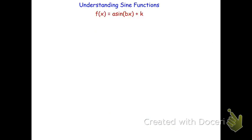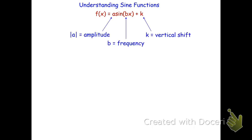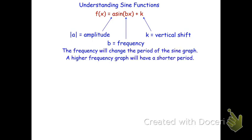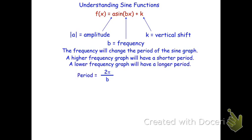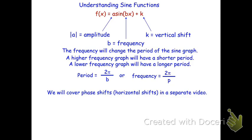The function form of a sine graph — this is the general form — f of x equals a sine of quantity bx plus k, where a is the amplitude, b is the frequency, and k is the vertical shift. Keeping in mind frequency is what changes the period of the sine graph, where a high frequency graph will have a short period, and a low frequency graph will have a longer period. The period can be found by taking 2π and dividing by the frequency b, or the frequency b can be found by taking 2π and dividing by the period. Keeping in mind that the period times the frequency, or b times p, will always be equal to 2π in radians. If you wish to see how to do horizontal or phase shifts, those are a separate video.